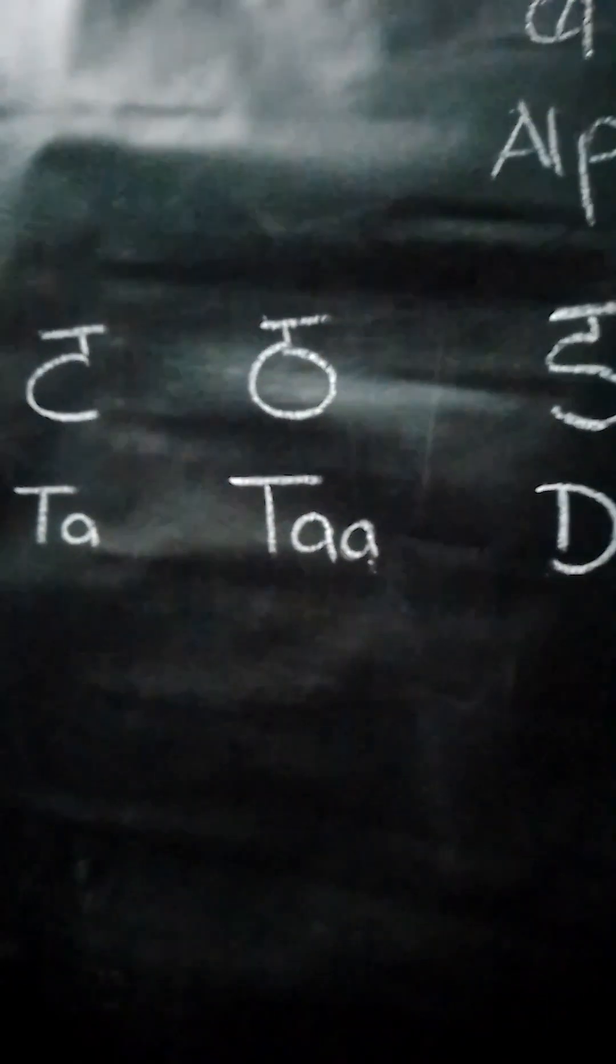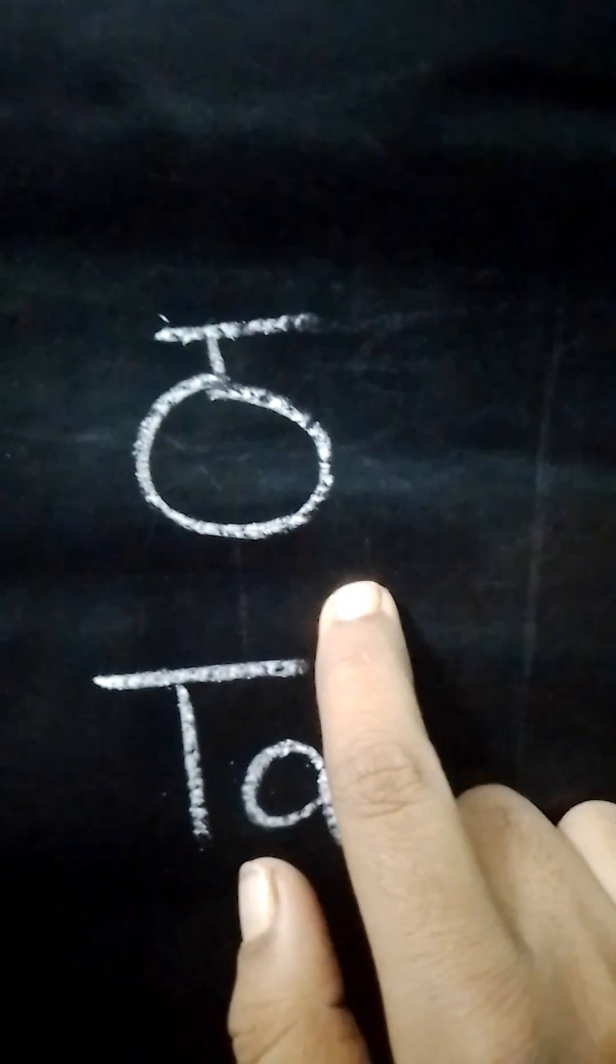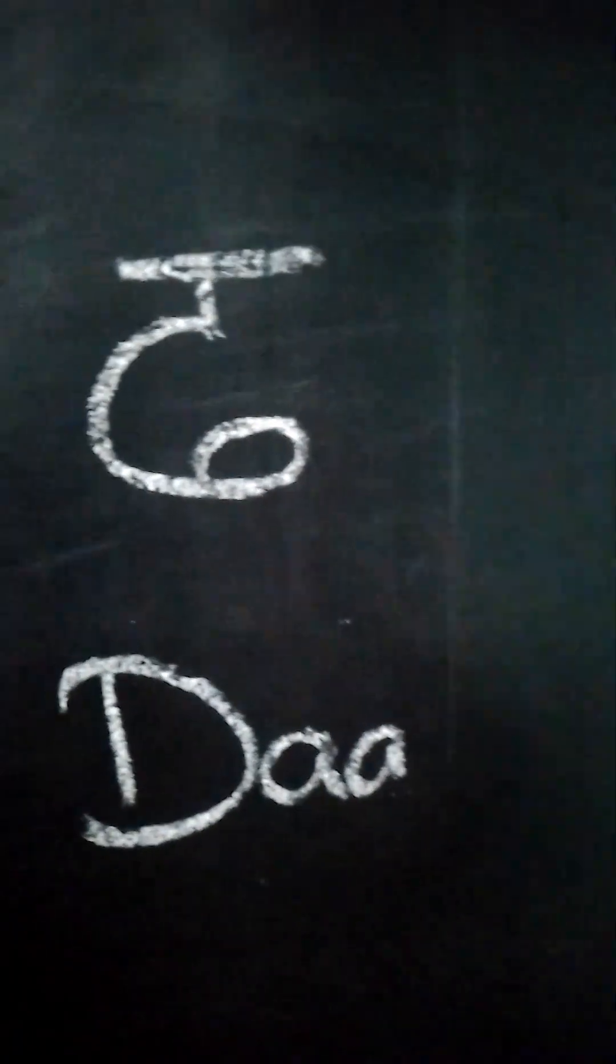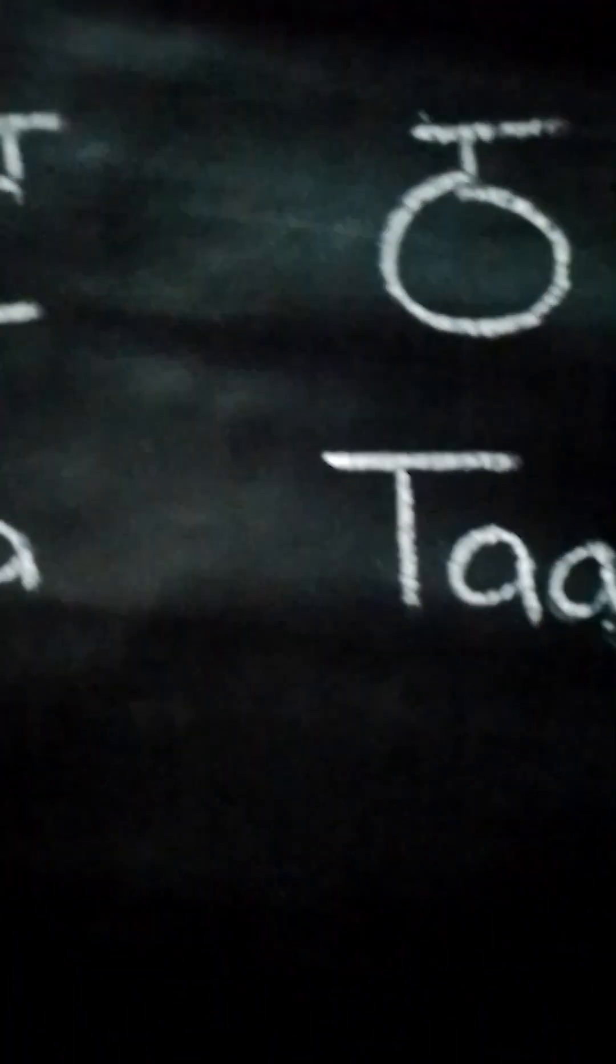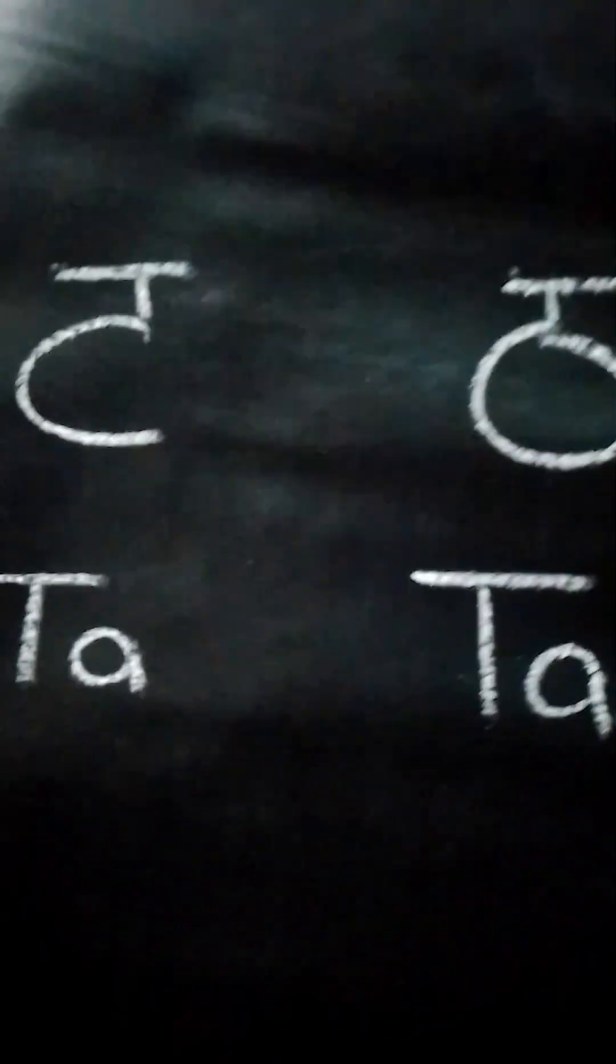So let's go for the video. It is Tha, Tha, Da, Da, Da and Na. Hi children, let's see how we can write the Hindi alphabets.